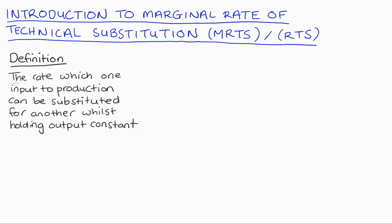To start with a definition: broadly, our marginal rate of technical substitution is going to tell us about the rate at which one input to production can be substituted for another input whilst holding output constant.